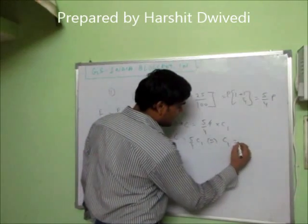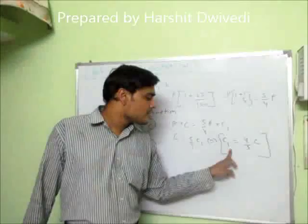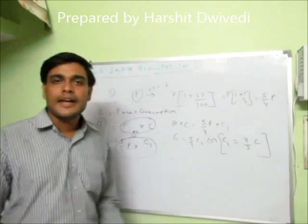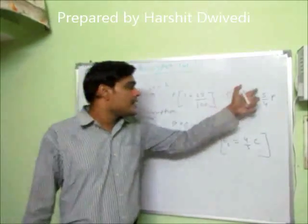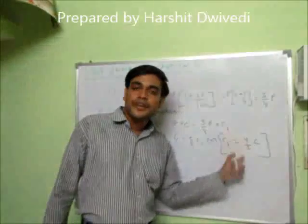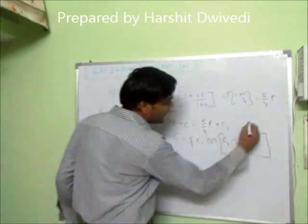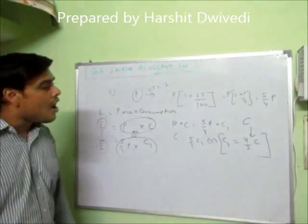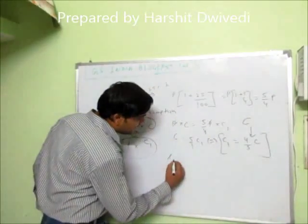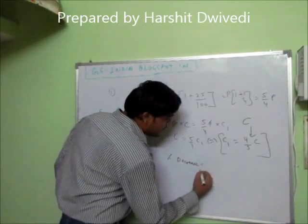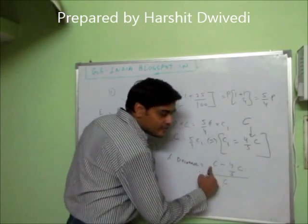Now what will be the value of C1 in terms of C? It is 4 by 5 C. This is of importance. This C1, that is the final consumption, came out as 4 by 5th of the initial consumption. So if petrol increased by 25% — that is 1 by 4 — it became 5 by 4, and consequently the consumption became 4 by 5. So the percentage decrease will be: C minus 4 by 5 C upon C into 100.